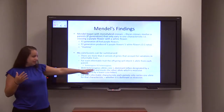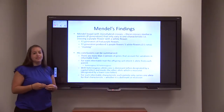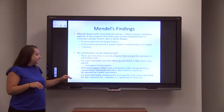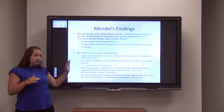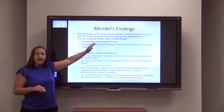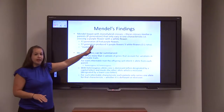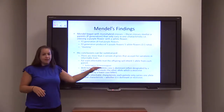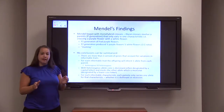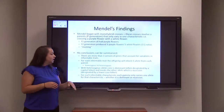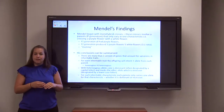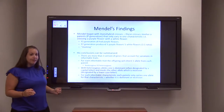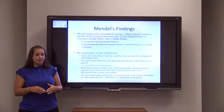With heterozygous alleles, one is dominant — abbreviated by a capital letter — meaning that trait will mask the recessive trait. The recessive trait is represented by a lowercase letter. For purple flowers, a capital P represents purple because it is dominant, whereas a lowercase p represents white because it is recessive. Heterozygous individuals have one capital letter and one lowercase letter, meaning they are a carrier for the recessive trait. Homozygous dominant individuals have two dominant alleles — capital P, capital P. Homozygous recessive individuals have two recessive alleles — lowercase p, lowercase p.